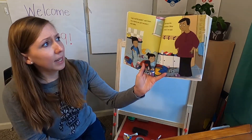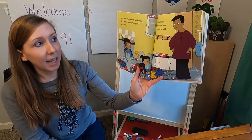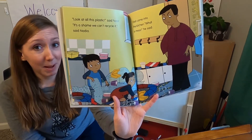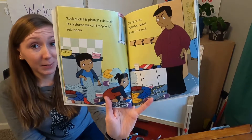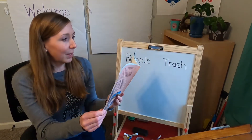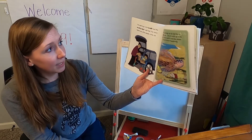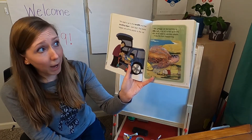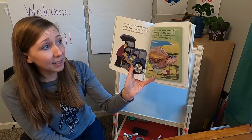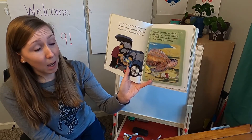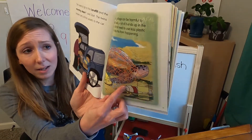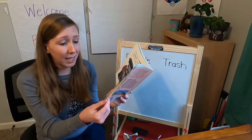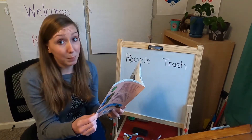Look at all of this plastic, said Nasir. It's a shame we can't recycle it, said Nadia. Dad came into the kitchen. The twins helped carry all the plastic to the car. Plastic garbage can be harmful to wildlife. Sadly, a lot of plastic ends up in the ocean — we all need to use less plastic to stop this from happening. Look at this poor sea turtle caught in some plastic twine. Sometimes animals eat plastic or they get caught in it, so it's better to recycle it if we can.